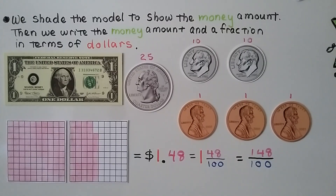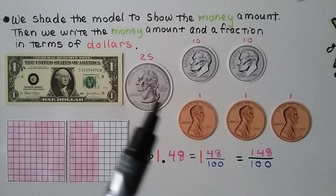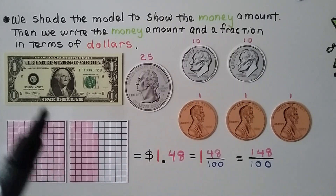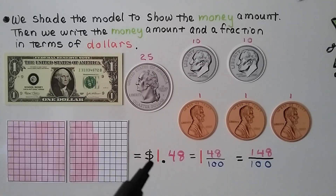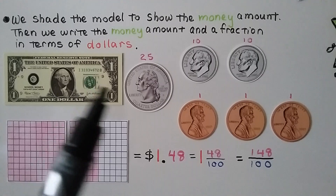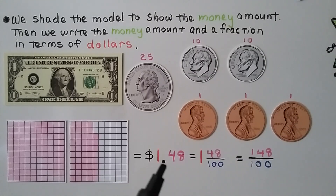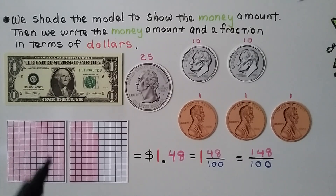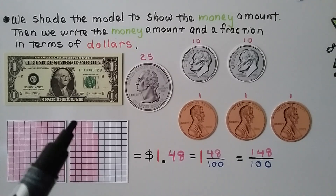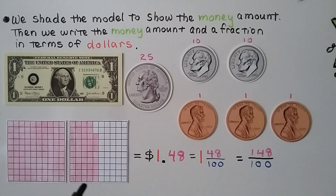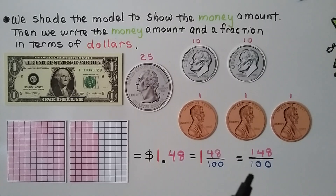We shade the model to show the money amount, then write it as a fraction in terms of dollars. We have one dollar, one quarter, two dimes, and three pennies. We write a one in the ones place. Counting: 25, 35, 45, 46, 47, 48 — we have $1.48. We shade one entire square of 100 for the dollar, then shade 48: columns of 10 for 40, then 8 more. It's equal to 1 and 48 hundredths, or 148 hundredths.